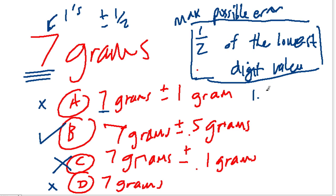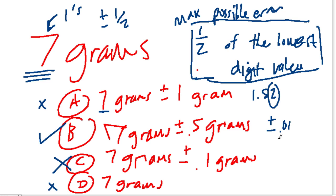So if the measurement was 1.52 and you wanted to find the range, you take half of the hundredths place value. The hundredths value is 0.01, so half of that is 0.005. You then add or subtract that amount — so the range would be 1.52 plus or minus 0.005.